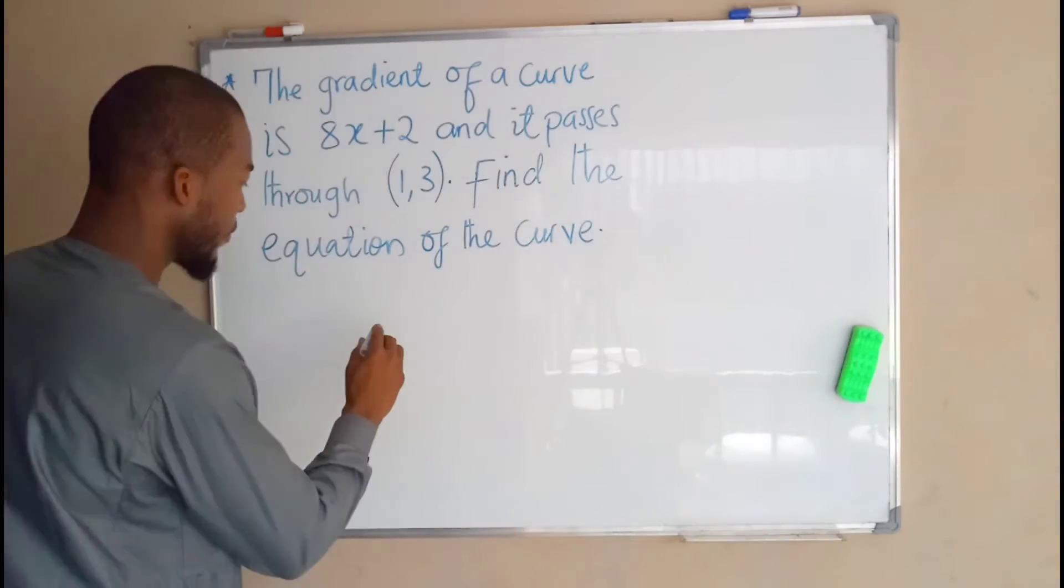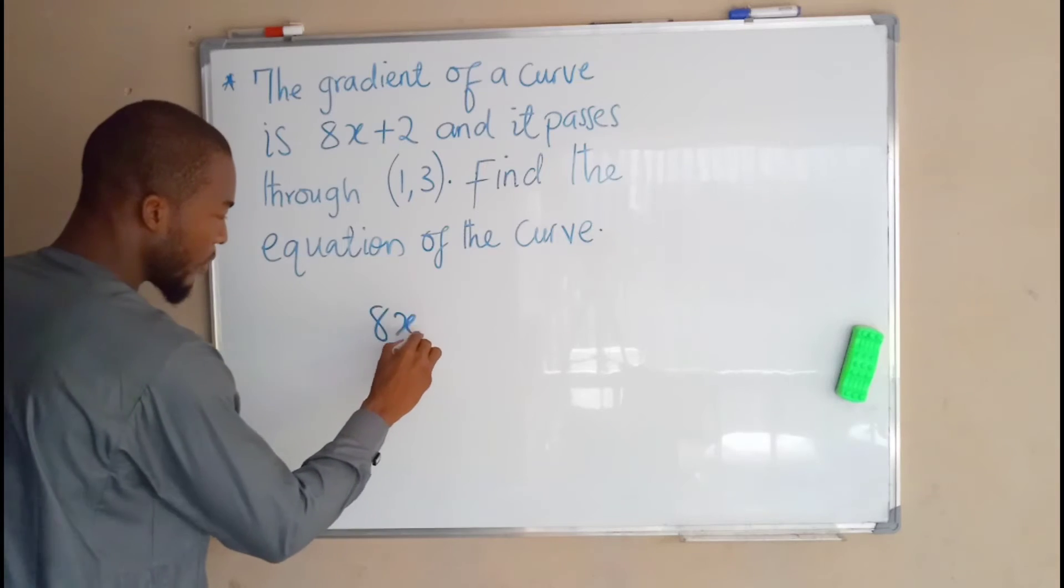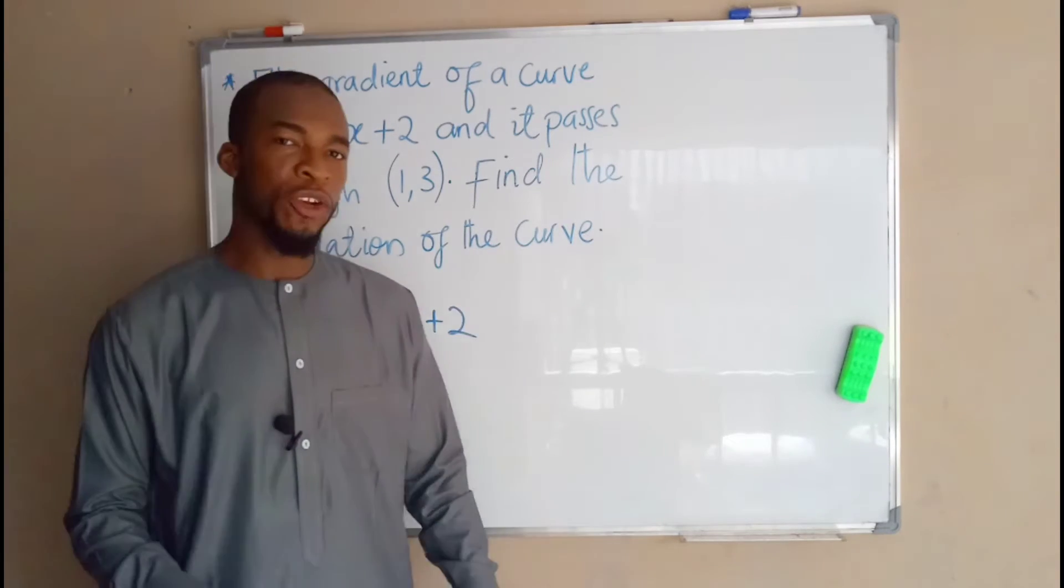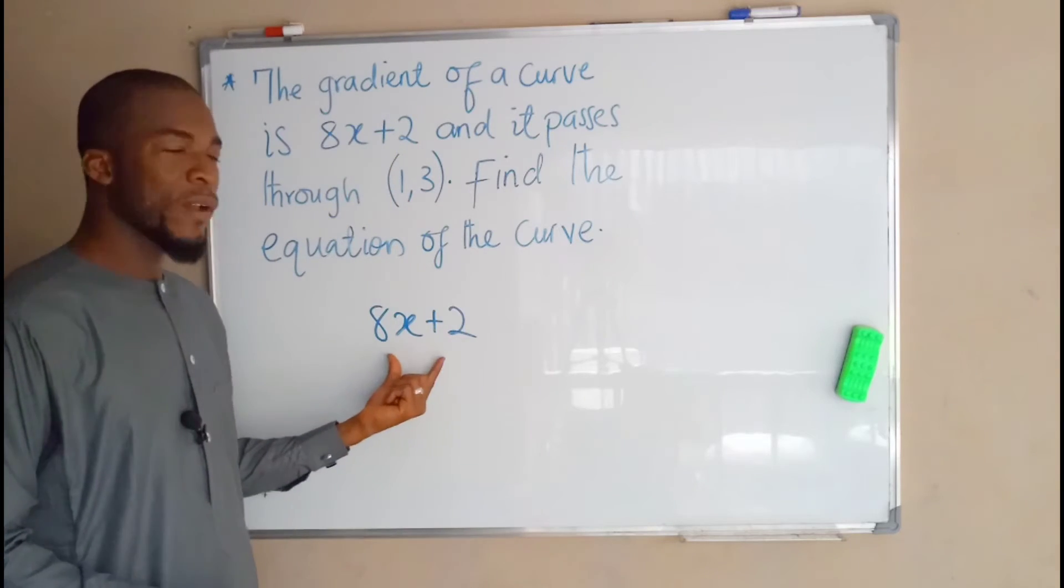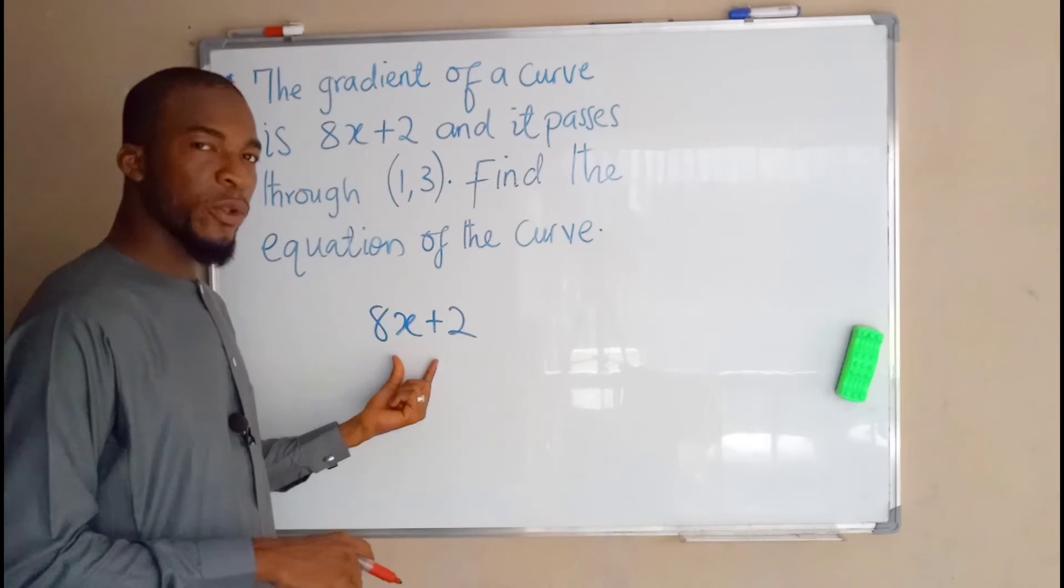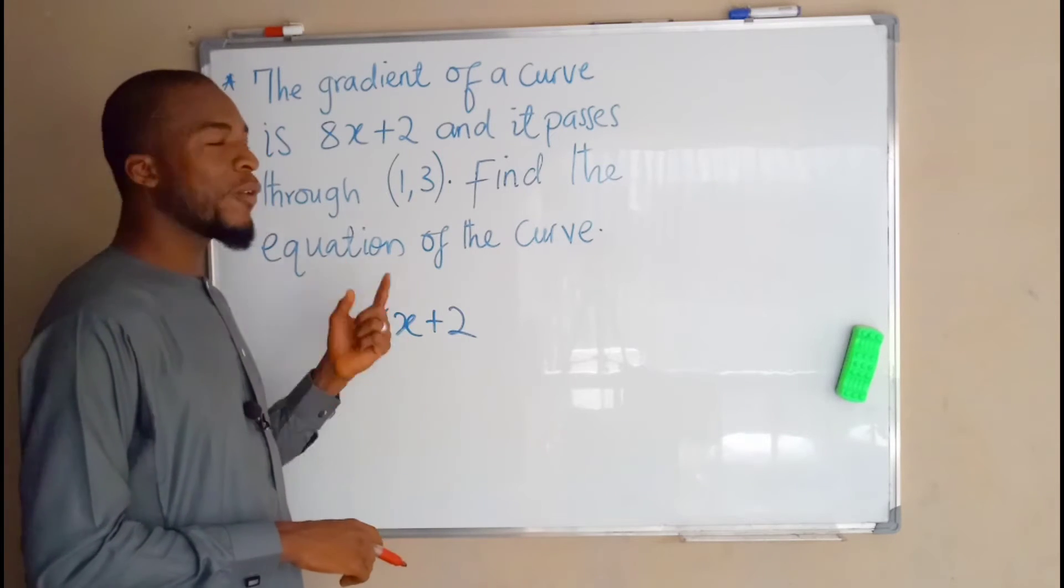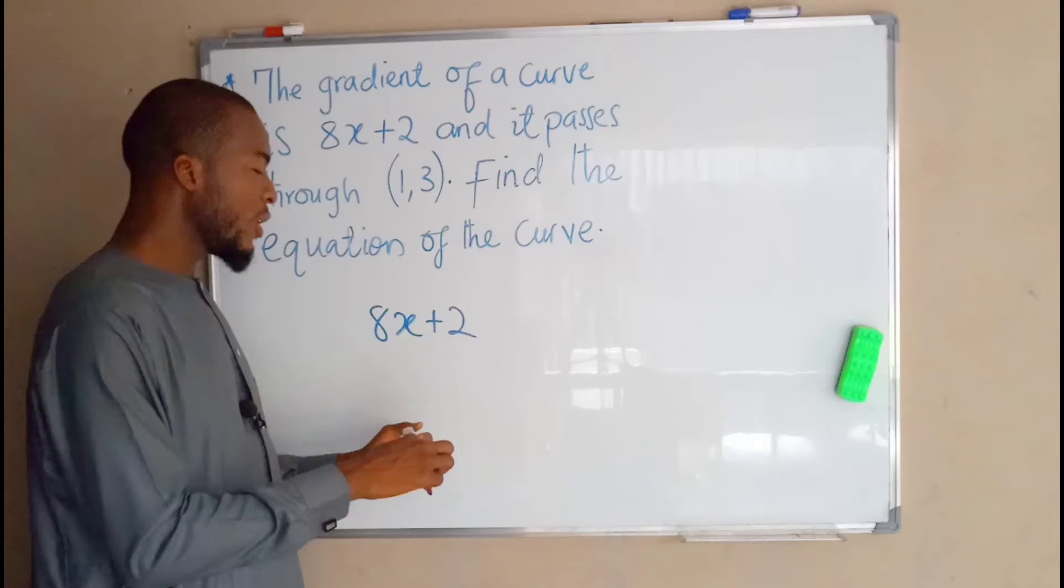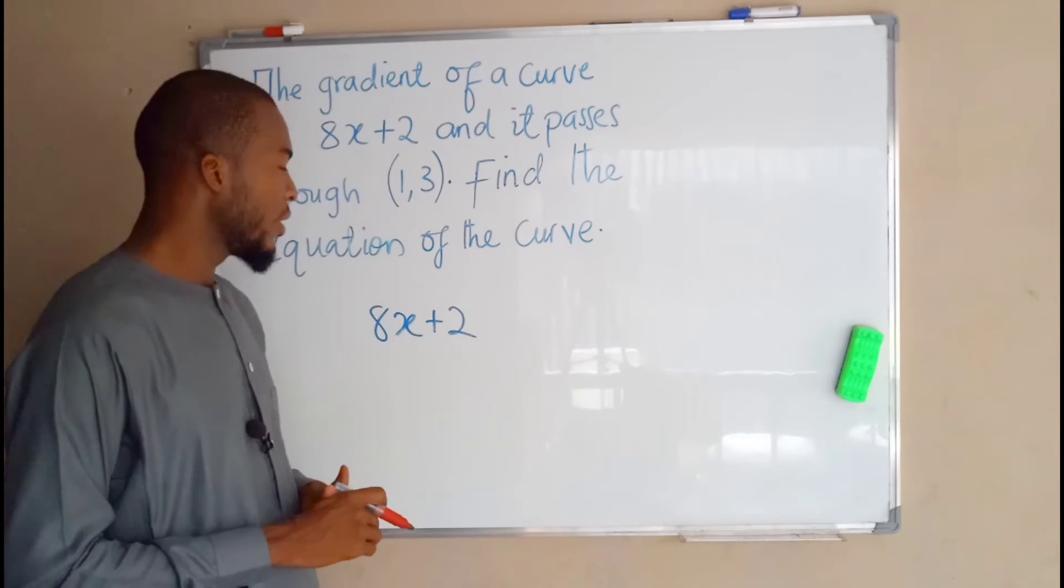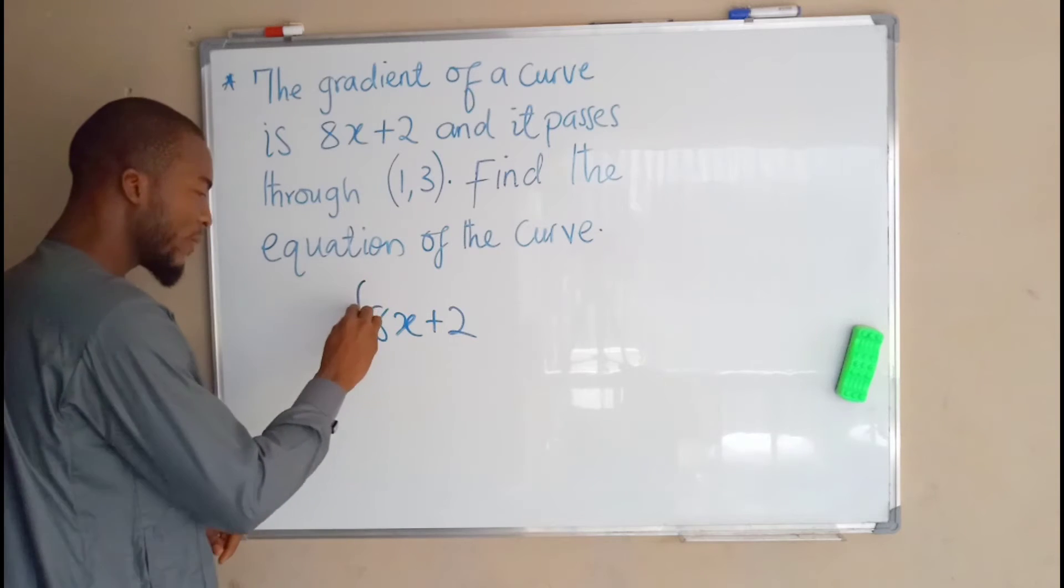You know that from calculus, this slope can be obtained by taking the derivative of the main function. If this slope is gotten by taking the derivative of the main function, therefore if we integrate this function, we are going to get back the original function. So we are going to integrate this function, which is indefinite integral with respect to x.